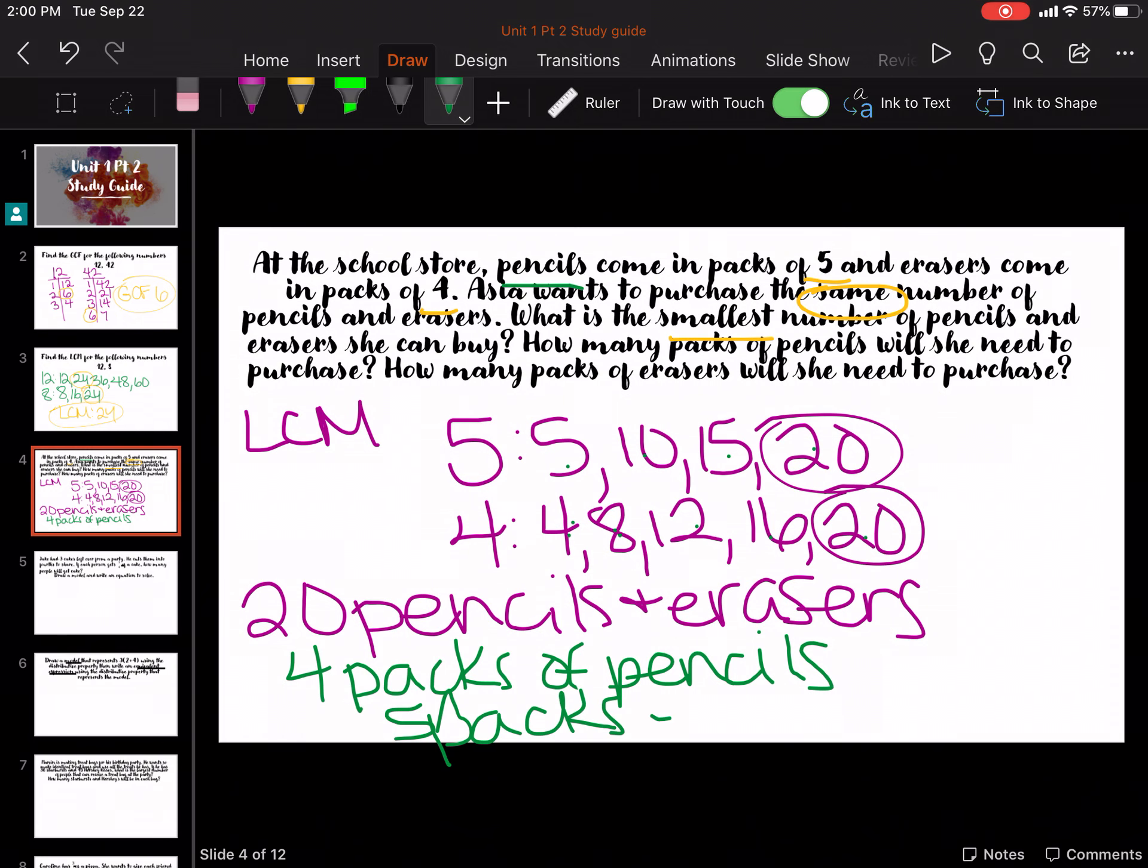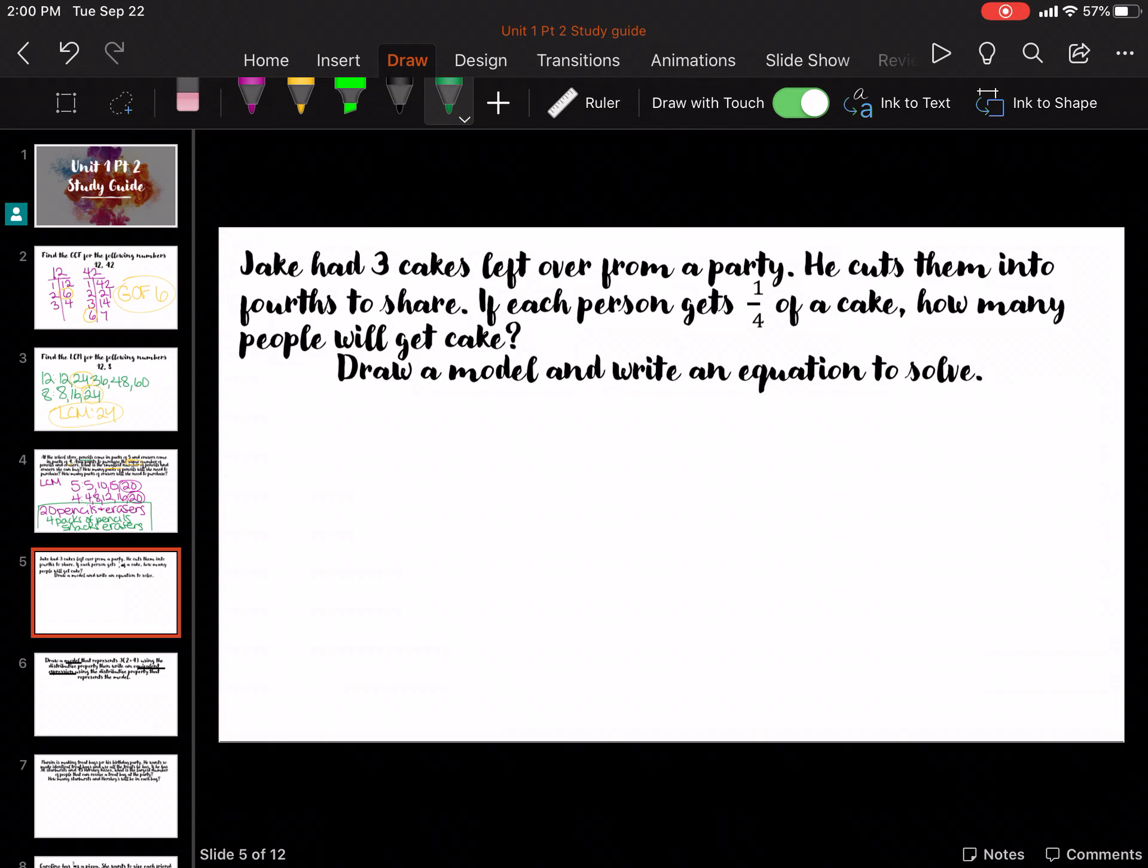Okay, make sure you've got all that filled in. Pause it if you need to. So Jake has 3 cakes left over from a party. He cuts them into 4ths to share. If each person gets 1 fourth of a cake, how many people did he share? We're going to do the model and the equation. So we're starting with 3 full cakes, dividing it into 4ths. Okay, so I'm going to start with my model. Drawing 3, that's not a very pretty cake.